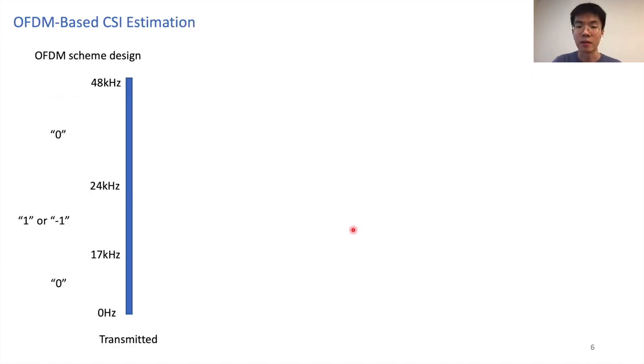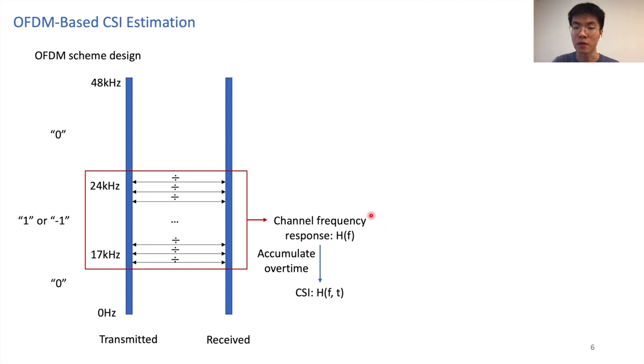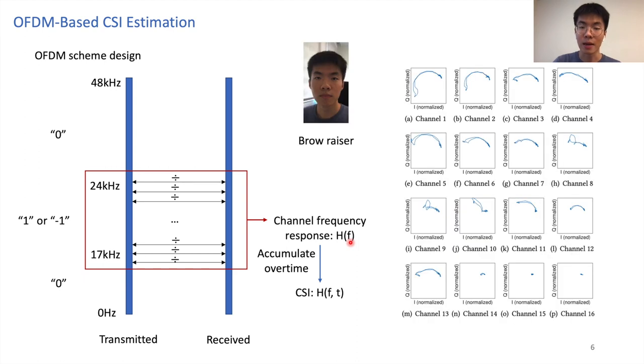In the OFDM-based CSI estimation module, we let the speakers transmit an inaudible OFDM signal, and we extract CSI from the received signal by computing the channel frequency response. An example of the CSI signal of an individual performing a brow raise is shown here.